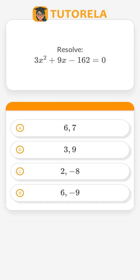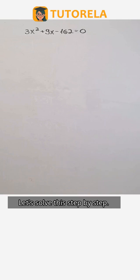Resolve. 3x squared plus 9x minus 162 equals 0. Let's solve this step by step.